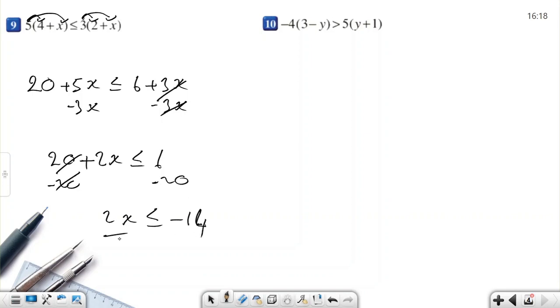Last step. Divide by 2. x is less than or equal to negative 7. When you simplify by 2, this is 1x. 14 divided by 2 is 7.